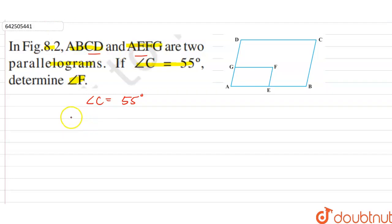Now, the property of parallelogram is that the opposite angles of parallelogram are equal. Therefore, we can say if angle C is equal to 55 degrees and ABCD is a parallelogram, then angle A is also equal to 55 degrees.